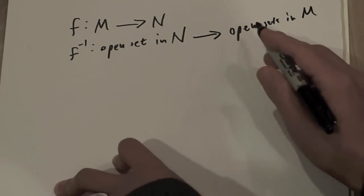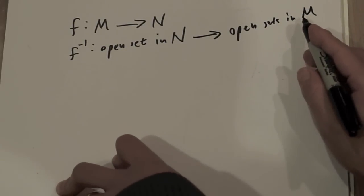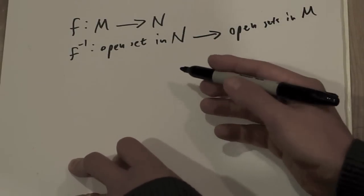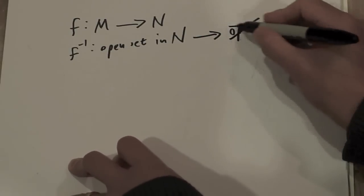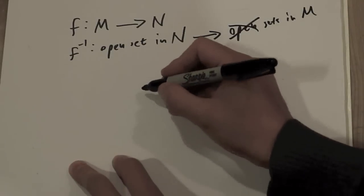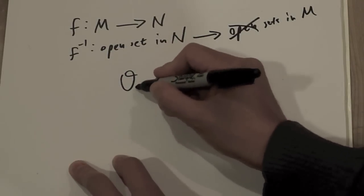If F is continuous, it'll take it to open sets in M. If we're asking whether it's continuous and we don't know yet, all we know is that it'll take it to sets in M. And the definition that is continuous says that, you know, we have open sets in N.